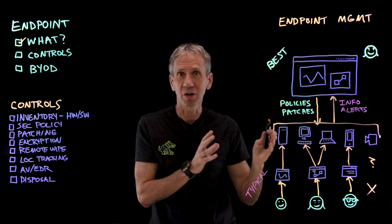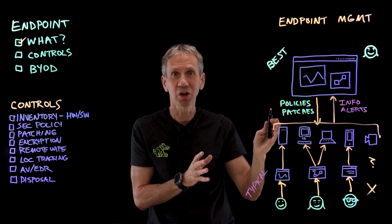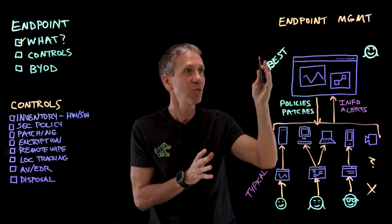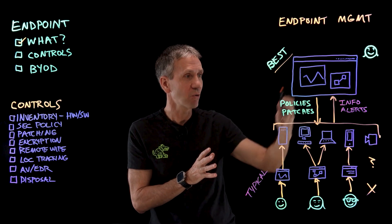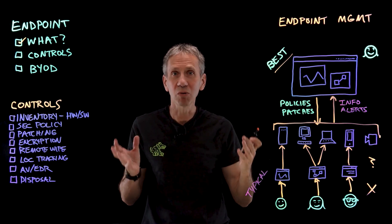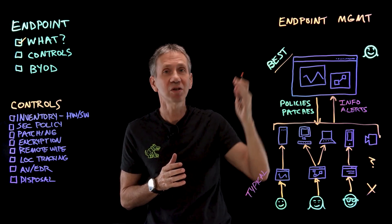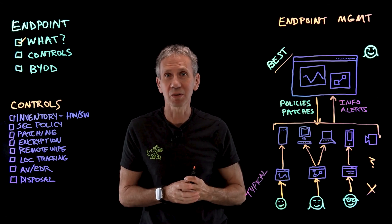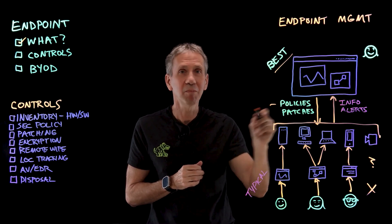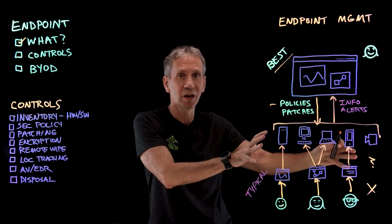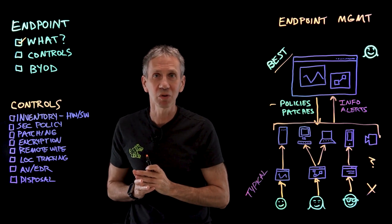Visibility and control are keys to security. If I can do both of those, I have a fighting chance. So the best practice is to integrate all of those into a holistic endpoint security management system. Now I've talked about policies — what might those policies be? What are the things I'm trying to enforce? Let's take a look at what some of those controls might be.